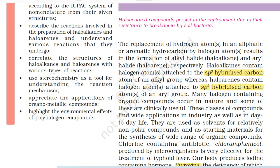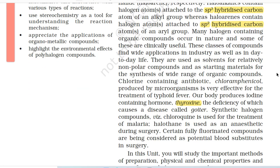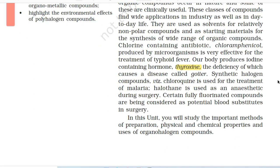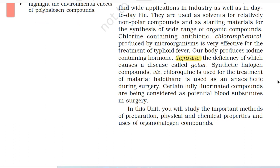Haloalkanes contain halogen atoms attached to the sp3 hybridized carbon atom of an alkyl group, whereas haloarenes contain halogen atoms attached to sp2 hybridized carbon atoms of an aryl group. Many halogen-containing organic compounds occur in nature and some are clinically useful. They are used as solvents for relatively nonpolar compounds and as starting materials for the synthesis of a wide range of organic compounds. Chlorine-containing antibiotic chloramphenicol produced by microorganisms is very effective for the treatment of typhoid fever. Our body produces iodine-containing hormone thyroxine, the deficiency of which causes goiter. Synthetic halogen compound chloroquine is used for the treatment of malaria. Halothane is used as an anesthetic during surgery, and certain fully fluorinated compounds are being considered as potential blood substitutes in surgery. In this unit, you will study the important methods of preparation, physical and chemical properties and uses of organohalogen compounds.